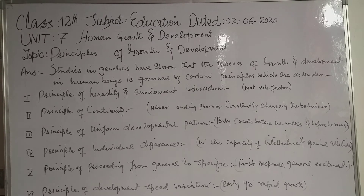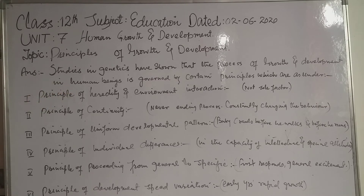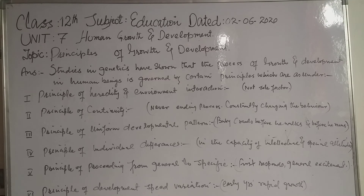Studies in genetics have shown that the process of growth and development in human beings is governed by certain principles. Number one: the principle of heredity and environment interaction. The process of growth and development involves active interaction between the forces of heredity and environment. The child gets body structure and many mental abilities due to heredity.